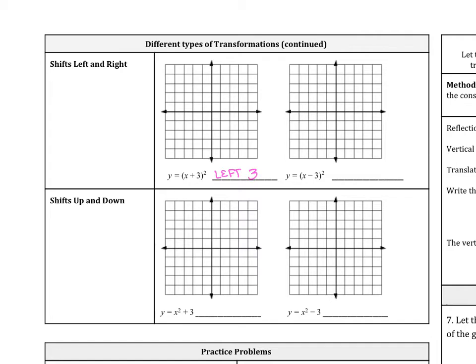So we're going to graph our quadratic. We're going to move our vertex left 3, use the pattern right 1, up 1, right 1, up 3, and then same thing on the other side. So here is left 3 of our quadratic.